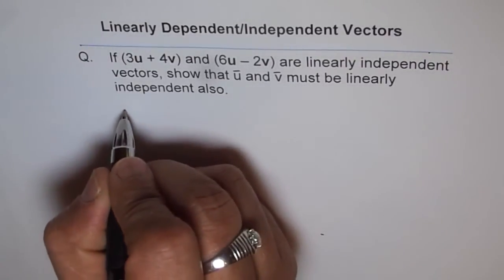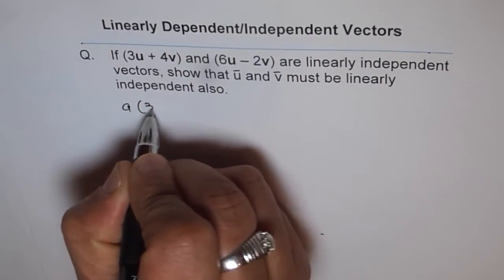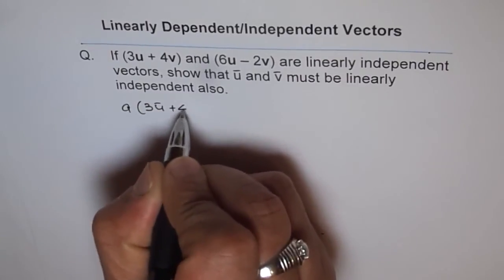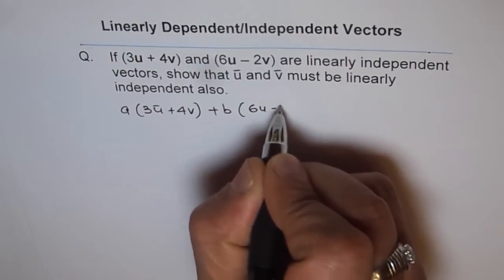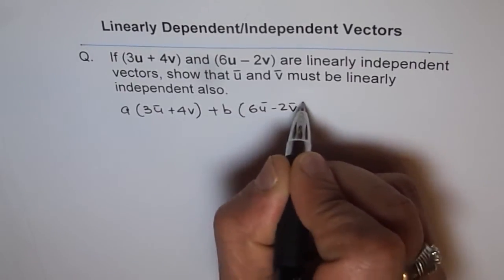It could be written as a(3u + 4v) + b(6u - 2v) = 0.